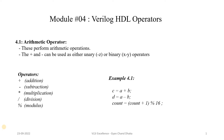Let's discuss the first type of operators which are arithmetic operators. Arithmetic operators perform arithmetic operations on operands. Operands are nothing but the entity on which the operation has to be performed. For example, in the expression c = a + b, plus is the arithmetic operator and a and b are the operands.